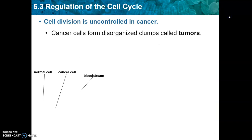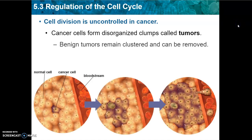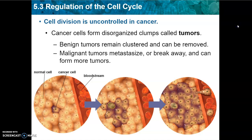Cell division can become uncontrolled in cancer. Cancer cells don't follow the rules — they don't follow the checkpoints; somehow they slip past those checkpoints. They form disorganized clumps of cells called tumors. A benign tumor is one that remains clustered and can be removed. A malignant tumor is one that can continue to grow and break off and form more tumors in other parts of the body.